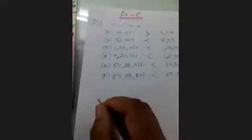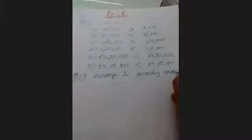Next is Question 2: Arrange in ascending order. In ascending order, we first write the smallest number, then the next smallest, and so on. Now, Part A.